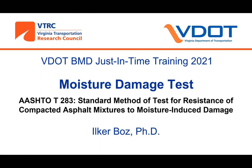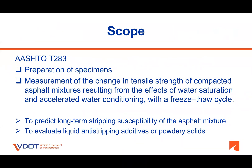This is a test method required by VDOT SPEC 211 to evaluate the resistance of compacted asphalt mixtures to moisture-induced damage. This method covers preparation of specimens and the measurement of the change of indirect tensile strength resulting from the effects of water saturation and accelerated water conditioning with a freeze-thaw cycle of compacted asphalt mixtures. The results from this test can be used to predict long-term stripping susceptibility of the asphalt mixture and evaluate liquid anti-stripping additives added to asphalt binder or fine materials, such as hydrated lime or portland cement, which are added to mineral aggregate.